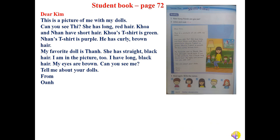Now let's listen and read. 'Dear Kim, this is a picture of me with my dolls. Can you see? She has long red hair — Kwa. And Non has short hair. Kwa's t-shirt is green. Non's t-shirt is purple. He has curly brown hair. My favorite doll is Tan. She has straight black hair. I am in the picture too. I have long black hair. My eyes are brown. Can you see me? Tell me about your dolls. From One.'